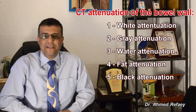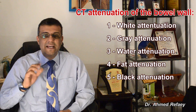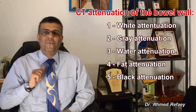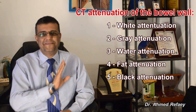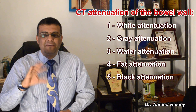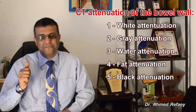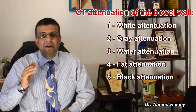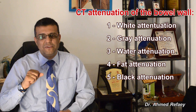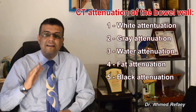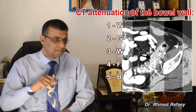The second category is gray attenuation, defined as thickened bowel wall that shows little enhancement, similar to the adjacent muscle. This pattern is mainly used to differentiate between benign and malignant disease — particularly diverticulitis versus neoplastic lesions. Bowel wall thickening of less than two centimeters is more characteristic of benign conditions, whereas thickening greater than three centimeters is usually present in neoplastic cases.